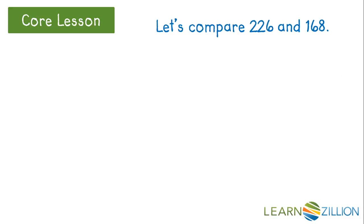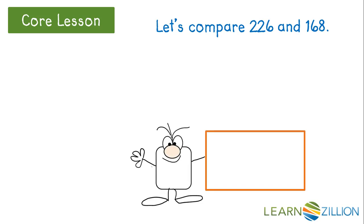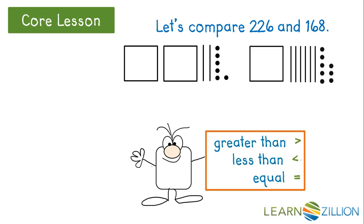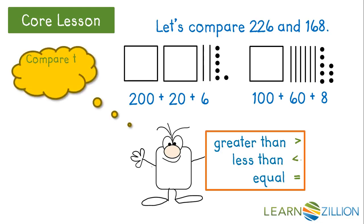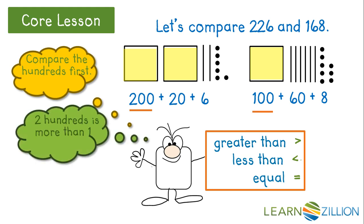Let's compare 226 and 168. We are going to be thinking about our compare symbols: greater than, less than, and equal. 200, 20, 6, 100, 68. 200 plus 20 plus 6 is 226. 100 plus 60 plus 8 is 168. We first want to compare the hundreds. 226 has two hundreds, 168 has 100. Two hundreds is more than 100. 226 is greater than 168. 168 is less than 226.